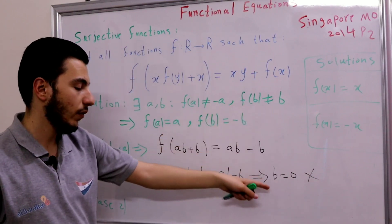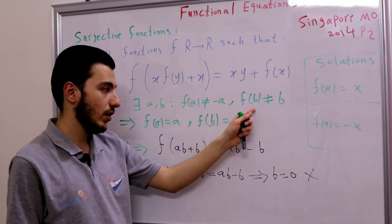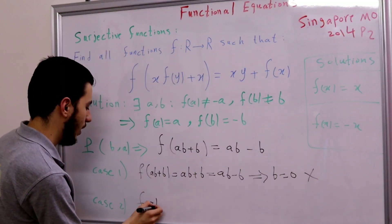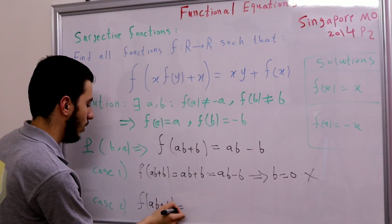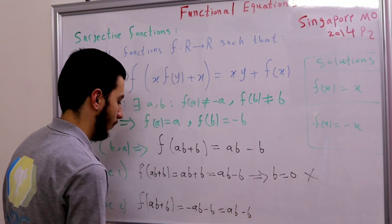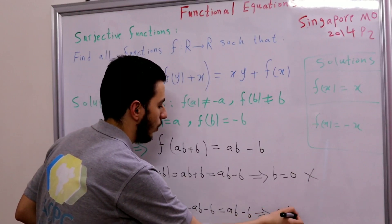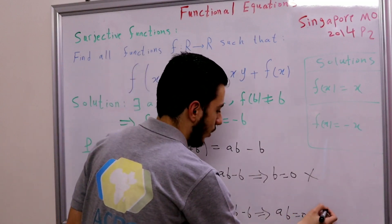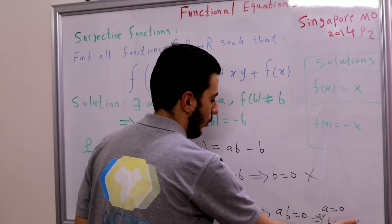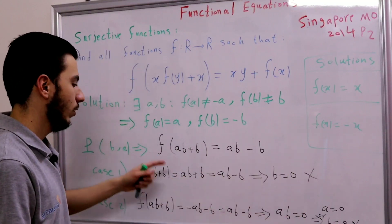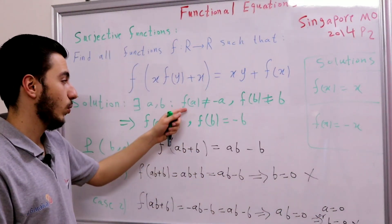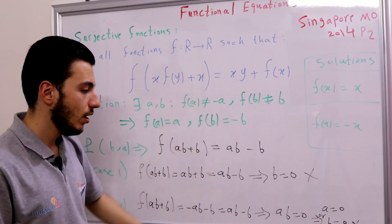Case 2: f(ab + b) = −ab − b, so −ab − b = ab − b, giving −ab = ab, so 2ab = 0, meaning a = 0 or b = 0. If b = 0, that's the same contradiction as before since f(0) = 0 but f(b) ≠ b. If a = 0, then f(0) = 0, but we assumed f(a) ≠ −a, i.e., f(0) ≠ 0, which is also a contradiction.